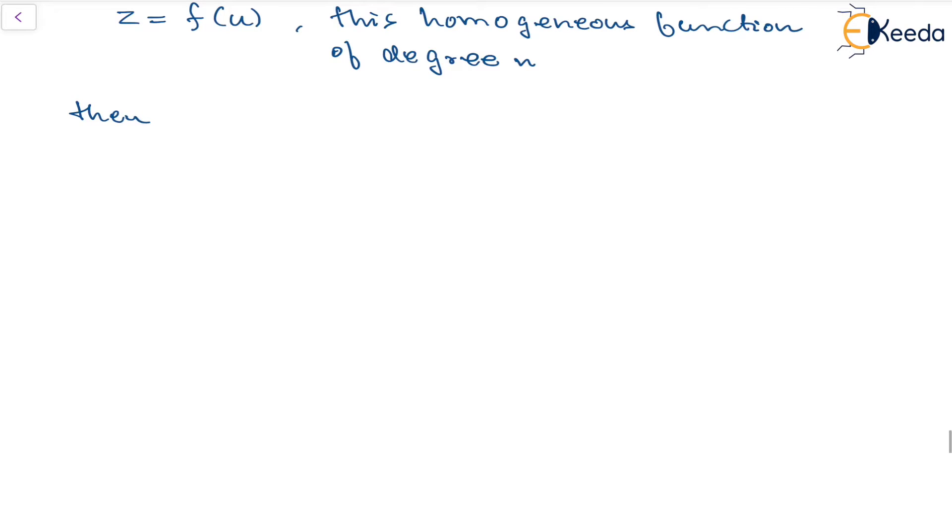We can say that x times du/dx plus y times du/dy will be equal to n times f(u) by f'(u). This is the second corollary of Euler's theorem.